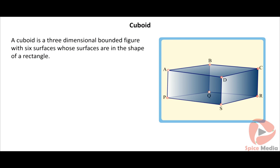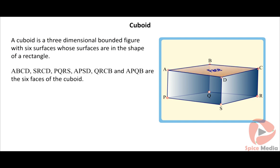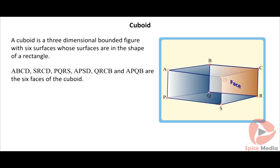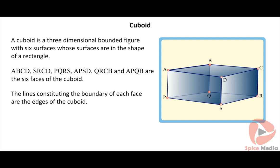A cuboid is a solid which is bounded by six surfaces; each surface is in the form of a rectangle. ABCD, SRCD, PQRS, DQRC, B, and APQB are the six faces of the cuboid. The lines constituting the boundary of each face are the edges of the cuboid. Two edges meet at a vertex of the cuboid.